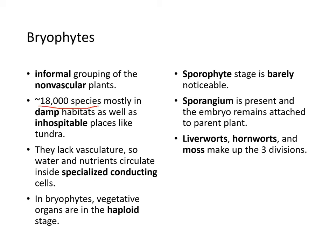Bryophytes lack vasculature, so water and nutrients circulate using special conducting cells. The vegetative organs are in the haploid stage, and the sporophyte stage is barely noticeable. Sporangia are present, and the embryo remains attached to the parent plant. Liverworts, hornworts, and moss make up the three divisions of bryophytes.